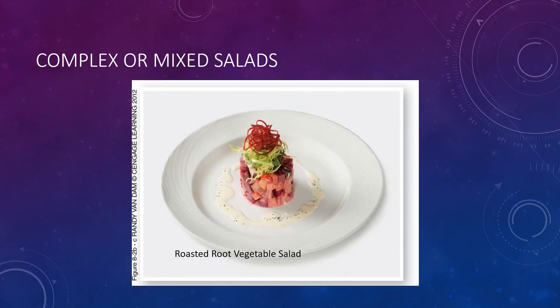Complex salads, also known as mixed salads, are heartier in character than simple salads and are composed of raw or cooked vegetables, fruits, meats, seafood, game, or poultry. Complex salads are seasoned with flavorful dressings or marinades and usually contain multiple ingredients from the same categories of foods. They are served as a salad course or as appetizers, accompaniments, or desserts. Examples include seafood salad, grilled marinated vegetables, roasted meats or vegetables, and a fruit plate with citrus yogurt dressing. Pictured here is a roasted root vegetable salad.